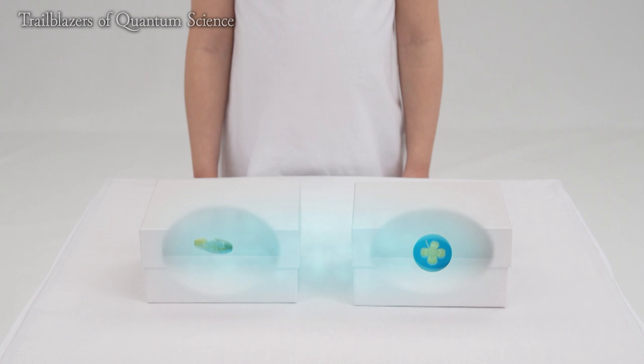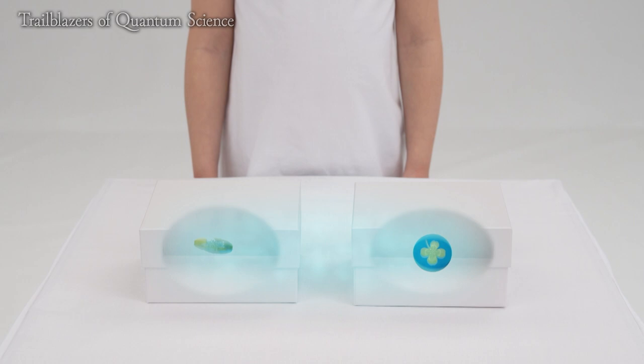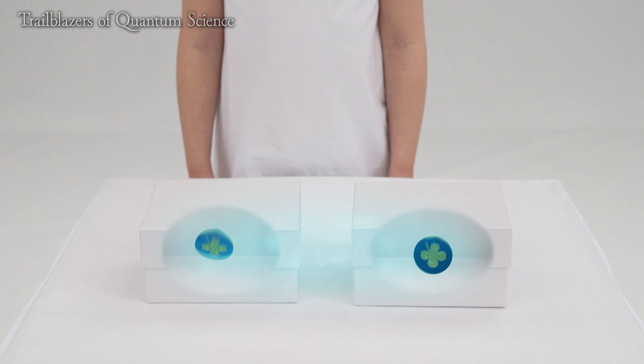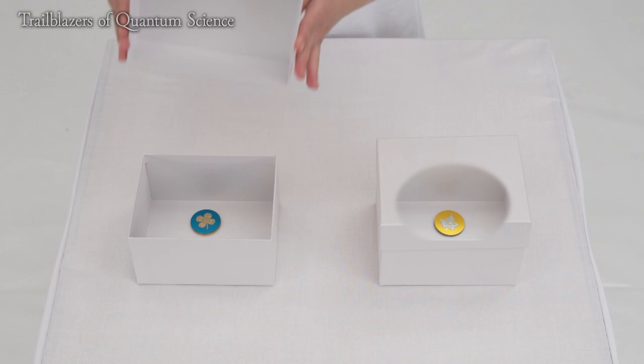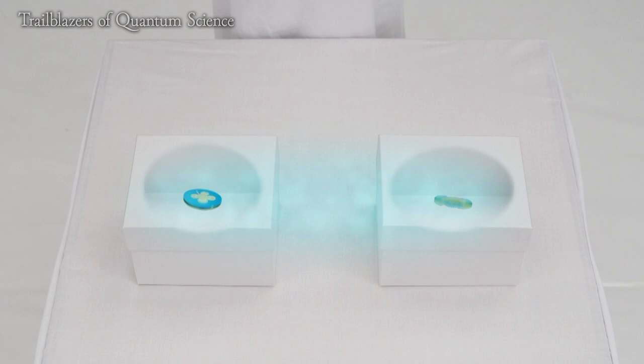Although the side of each coin that will appear isn't determined until it is confirmed in either of them, when only one of the boxes is opened, simultaneously the result in the other box, which is at a distant location, will also be determined. This strange link, resembling a sort of invisible connection, is called quantum entanglement.